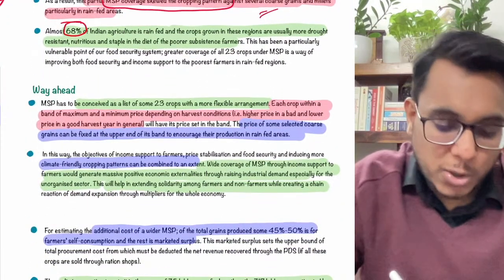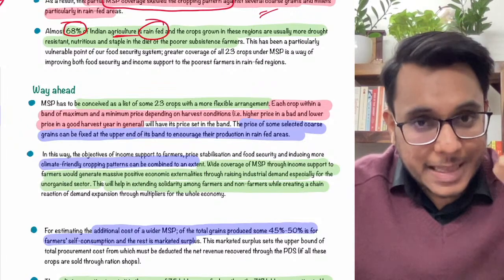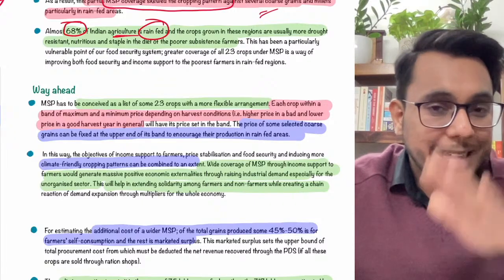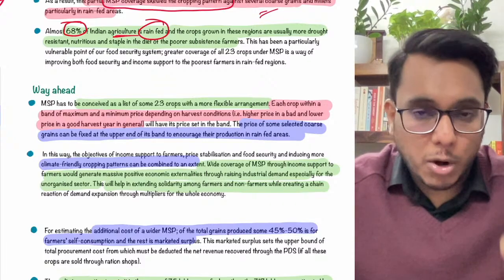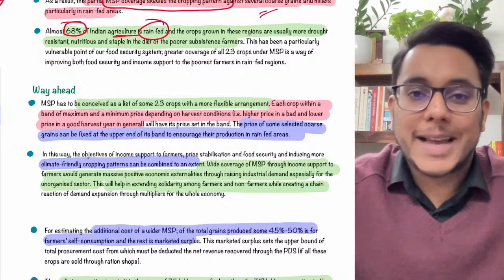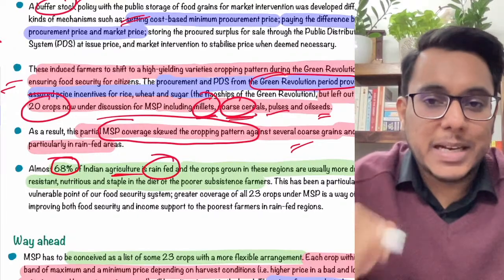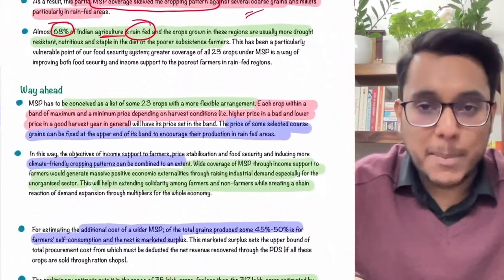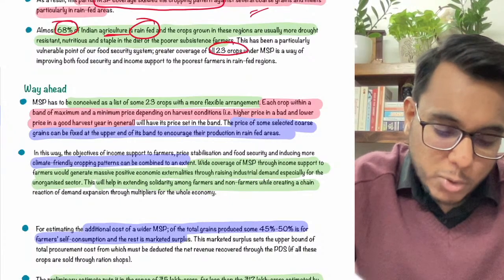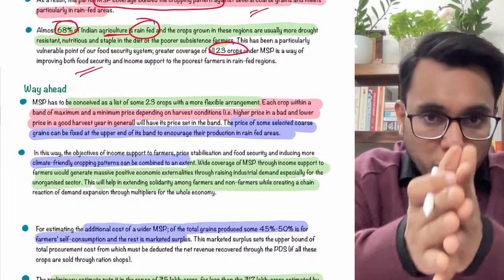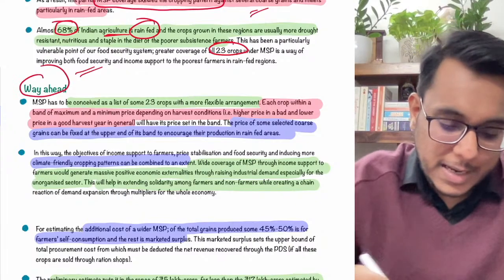Around 68% of Indian agriculture is rain-fed — dependent on rainfall, without proper irrigation. In rain-fed belts, growing wheat or rice is not an option; farmers grow coarse cereals and millets. Giving MSP for such crops is very important. Today MSP is given for 23 crops, but this umbrella needs to be expanded.